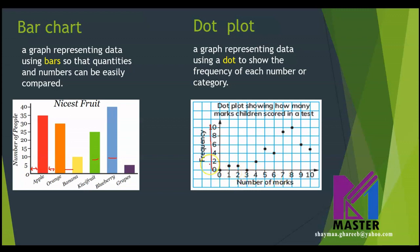In any graph, we have to label the graph with the proper scale, proper labels, and title of the graph, as you can see. In the dot plot, we use dots to represent the frequency. And remember, we don't connect the dots in the dot plot.